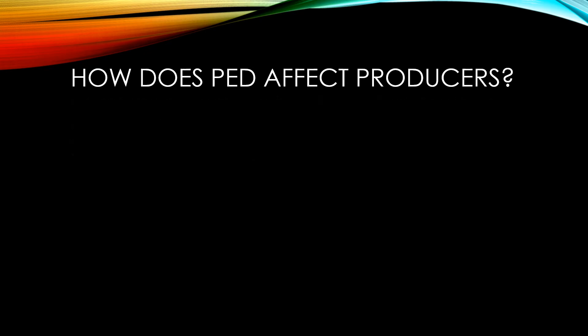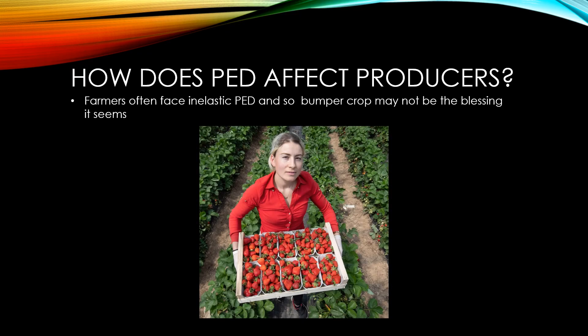Farmers often face inelastic PED, so a bumper crop may not turn out to be the blessing that it first seems. Some of their crops may end up going to waste because there's no one to sell them to. And as you'll see when we look at the price elasticity of supply, it may just lead to lower prices for all of their goods.